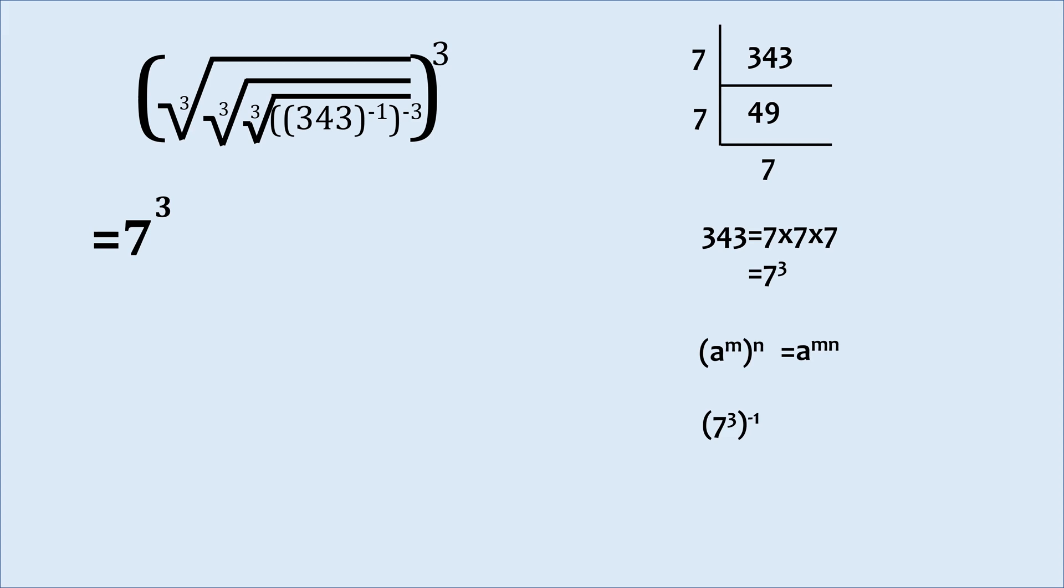Therefore, this expression will be something like 7 to the power 3 times minus 1. Now, we know a cube root of a is basically a to the power 1 by 3. Therefore, the expression will take this form.